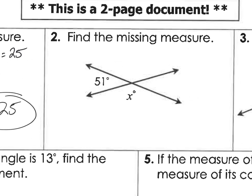These angles would be — why do you say that? Because they're on a straight line, right? So a straight line equals 180. So 180 minus 51 gives us what? Good.